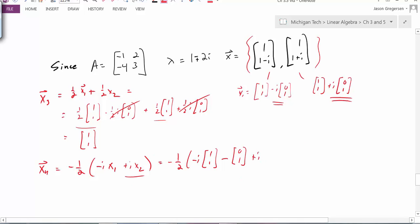This is plus i times 1, 1, and plus i times this piece. But once again, i times i is negative 1. So I get minus 0, 1. And now I look to simplify. I see my two complex pieces cancel out again. I'm left with minus two of these.